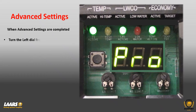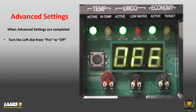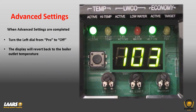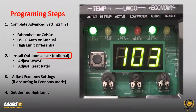Once you're done with your advanced settings, simply turn the left-hand dial to off. Within about 10 seconds it will revert back to the boiler's outlet temperature — in this example, 103 degrees. That covers advanced settings. If you don't need to do anything there, skip it and go right to the next step.